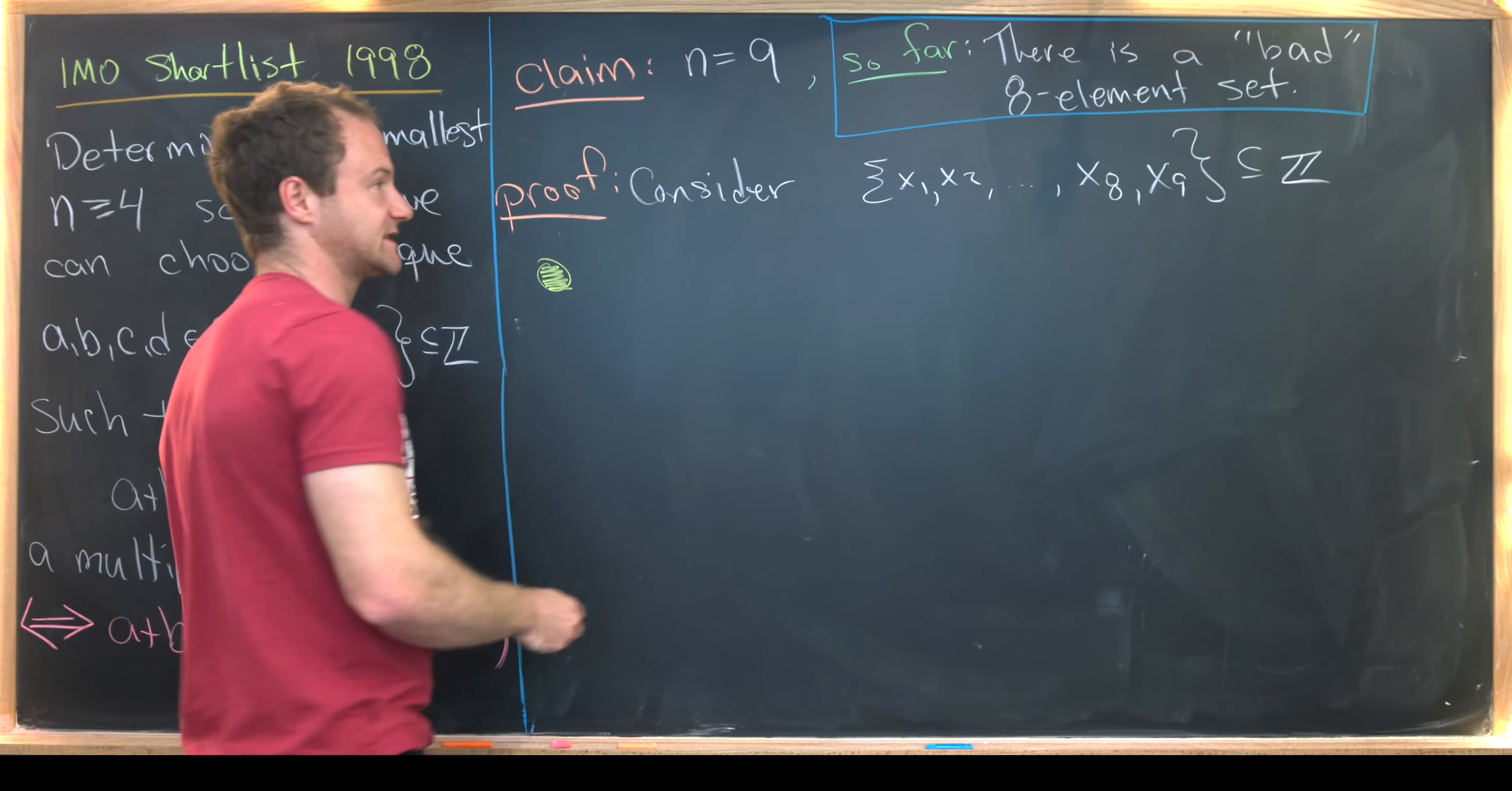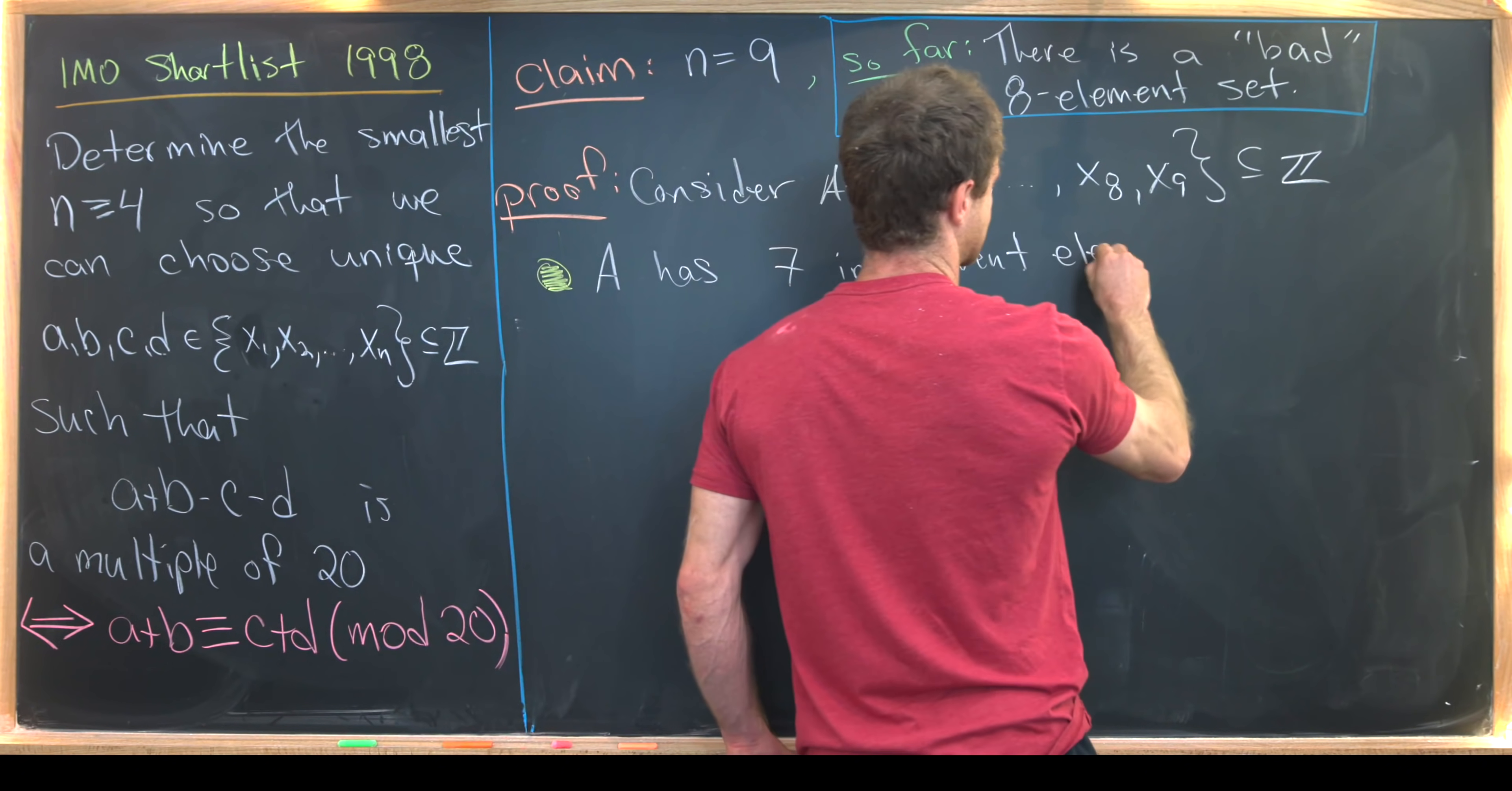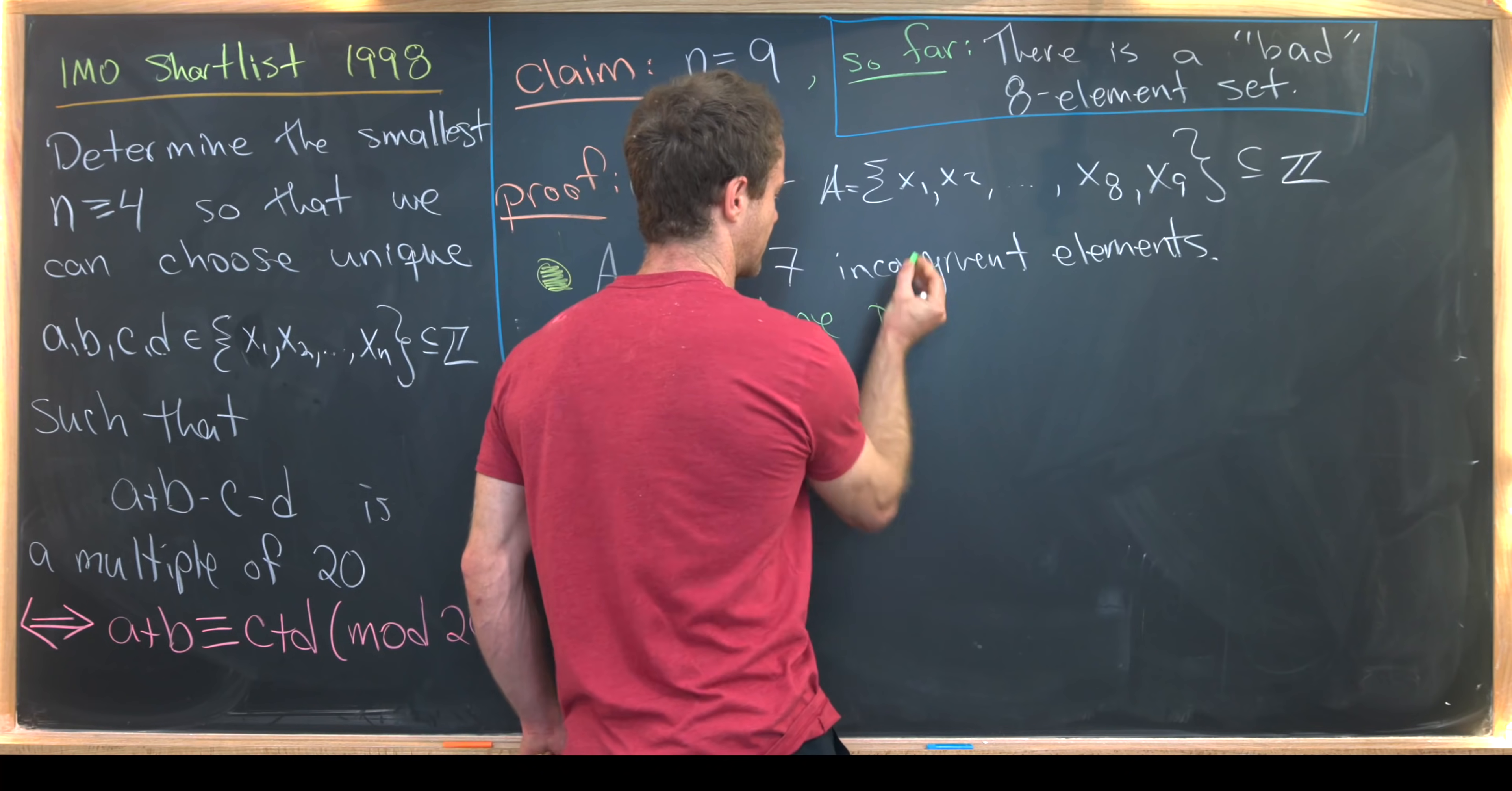The first case is, well, maybe I'll call this a. So a has seven incongruent elements. But in that case, we're done by our previous observation. So I'll just write that down, done by previous.